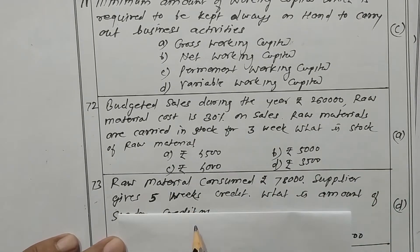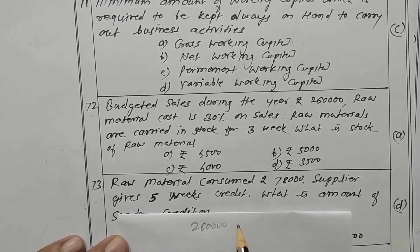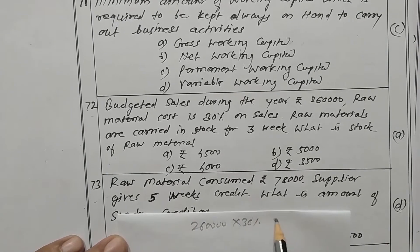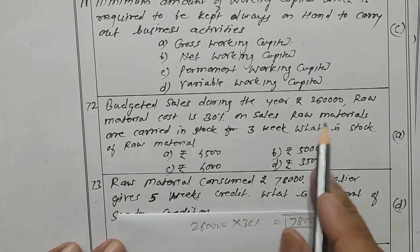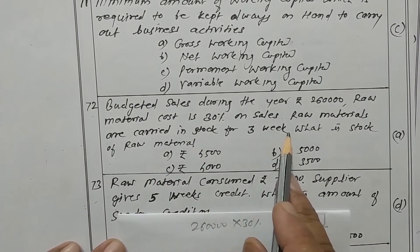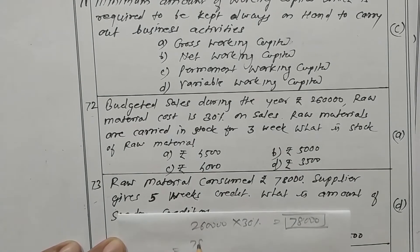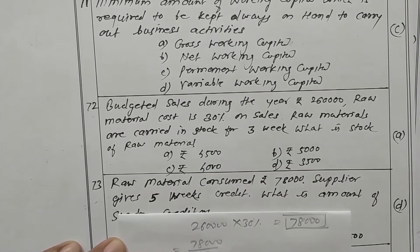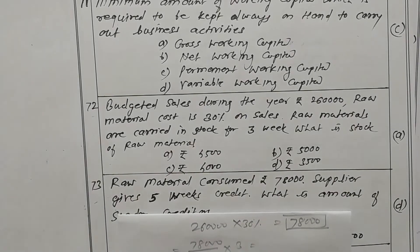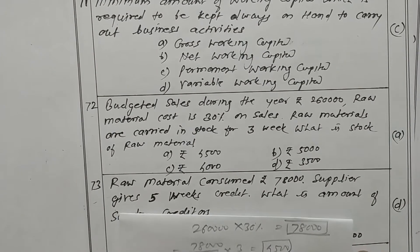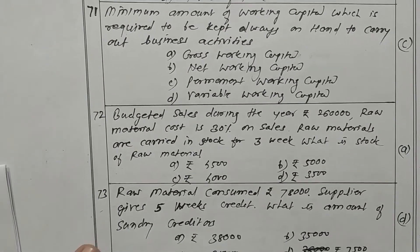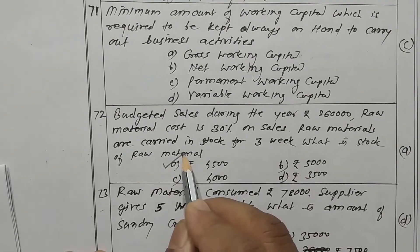Budgeted sales is rupees 2,60,000. Raw material cost is 30 percent, so raw material consumption is 78,000. Stock of raw material for a 3-week period gives an answer of 4,500. Option A is the correct one.